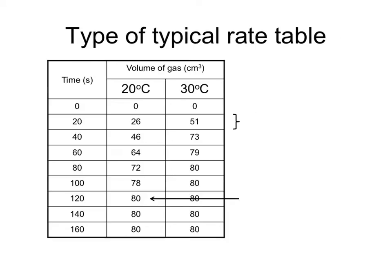We can also interpret data from a table to tell us which is the fastest of two reactions. Here, the reaction at 20 seconds is fastest at 30 degrees because here we've produced 51 cubic centimetres after 20 seconds, but at 20 degrees only 26 cubic centimetres. The other way we can compare the rate of reaction is by how long the reaction takes. The one at 20 degrees has stopped at 120 seconds because beyond 120 seconds the volume of the gas produced doesn't increase anymore. However, the one at 30 degrees is faster because that one has stopped by 80 seconds. Beyond 80 seconds, again, no more gas is produced.